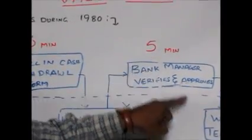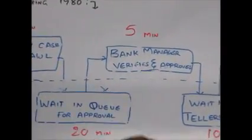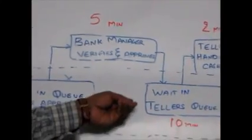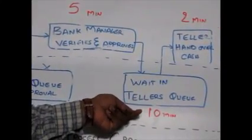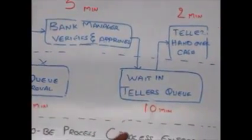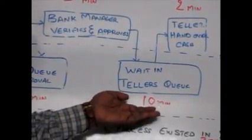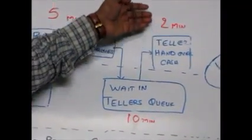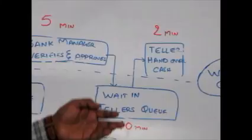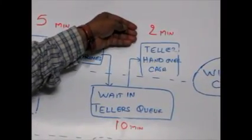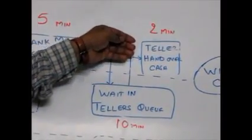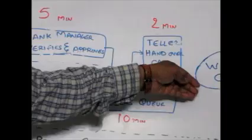He verifies that yes, he is a valid account holder, he has the necessary balance, his request of withdrawing cash can be processed. Let's say it takes 5 minutes. And then, after he provides a token to us, with that token, we have to wait in the teller's queue. Let's assume that on average 10 minutes, we stand in the queue. We go to the teller, and when the teller comes to us, 2 minutes of time, the teller processes our cash and hands over the cash to us.